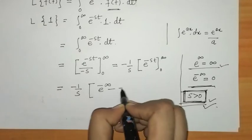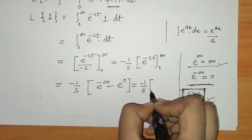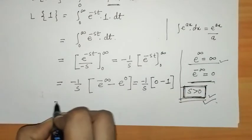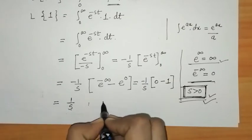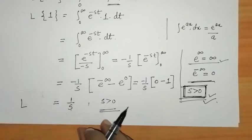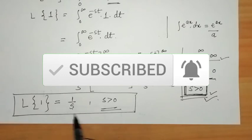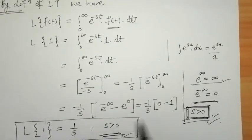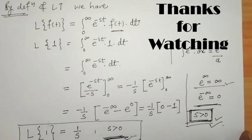When we apply the limits, we have minus 1 upon s times e raised to minus infinity minus e raised to 0. That gives minus 1 upon s times 0 minus 1, and the two negatives give plus, so we get 1 upon s. Therefore the Laplace transform of 1 is 1/s, where s is greater than 0. That's it for now, see you in the next video, thank you, keep watching.